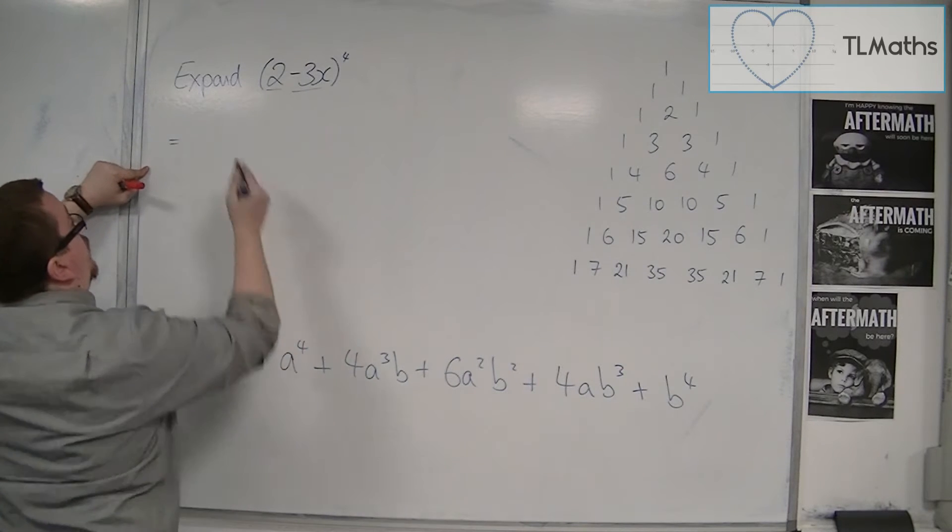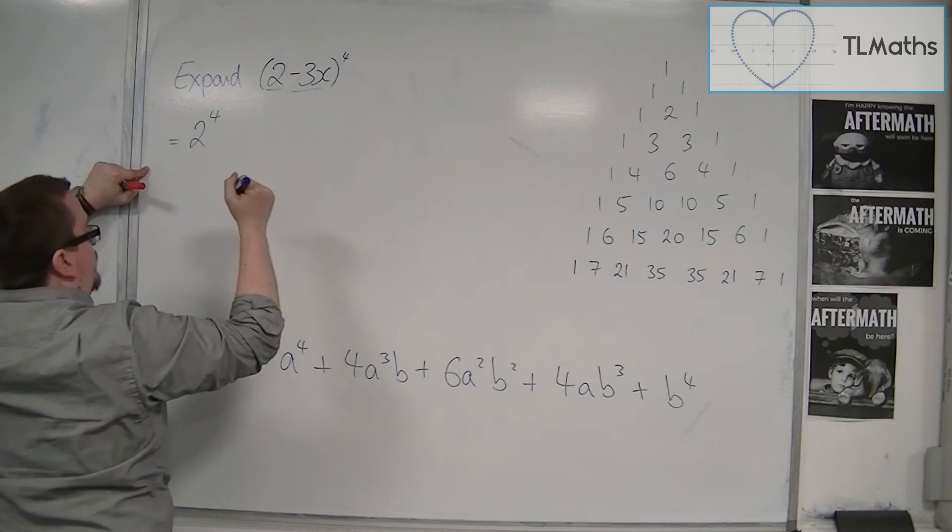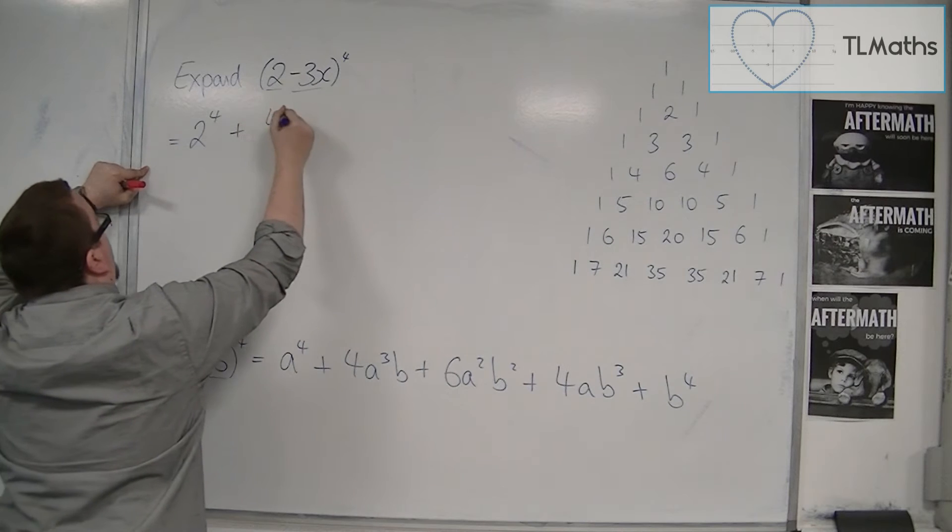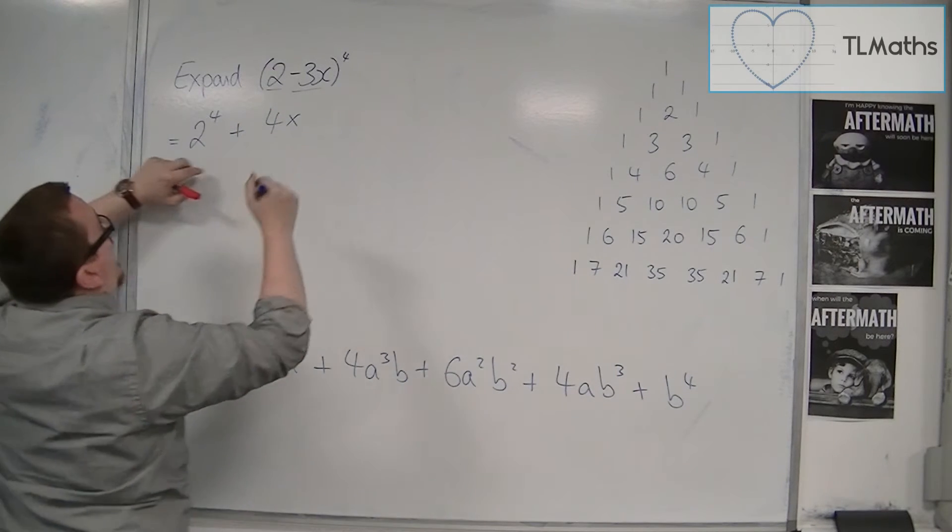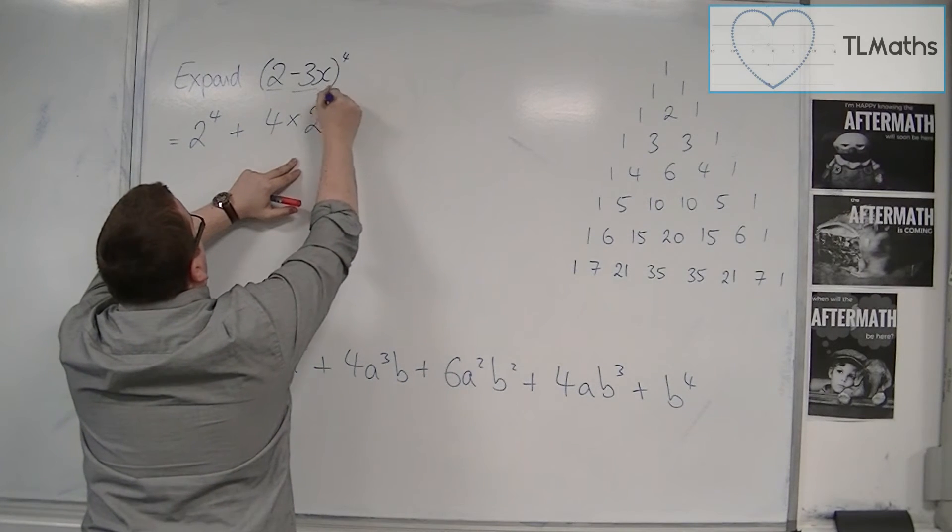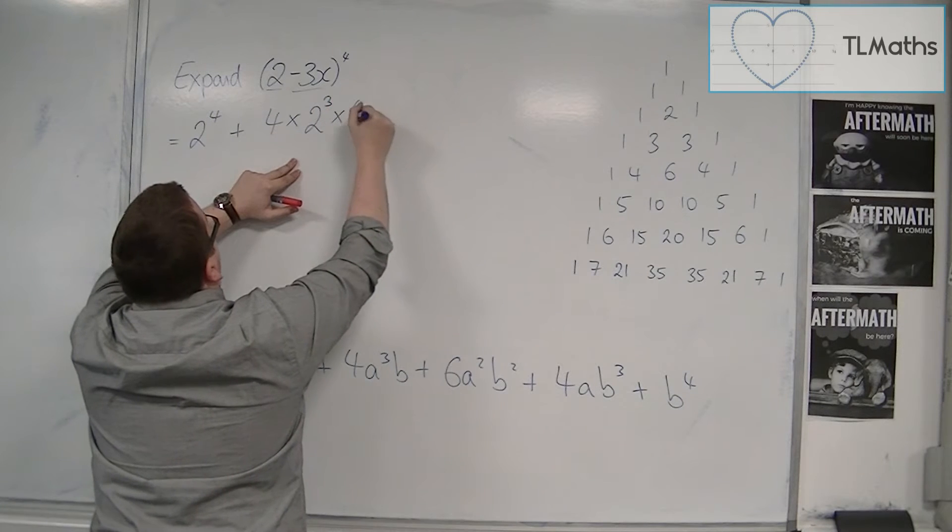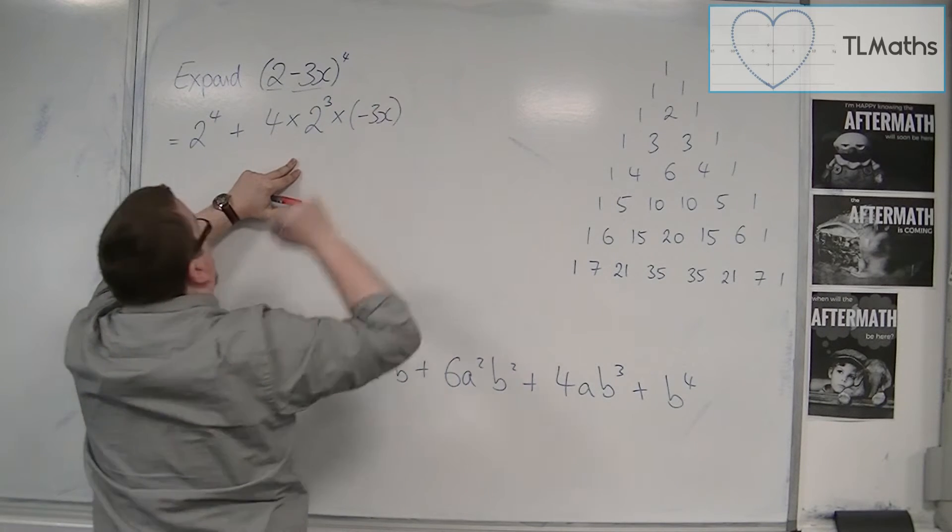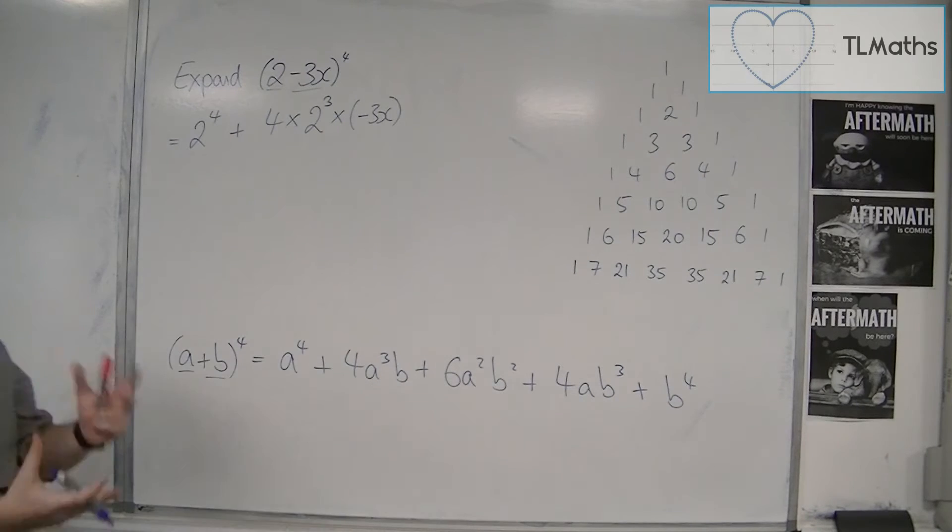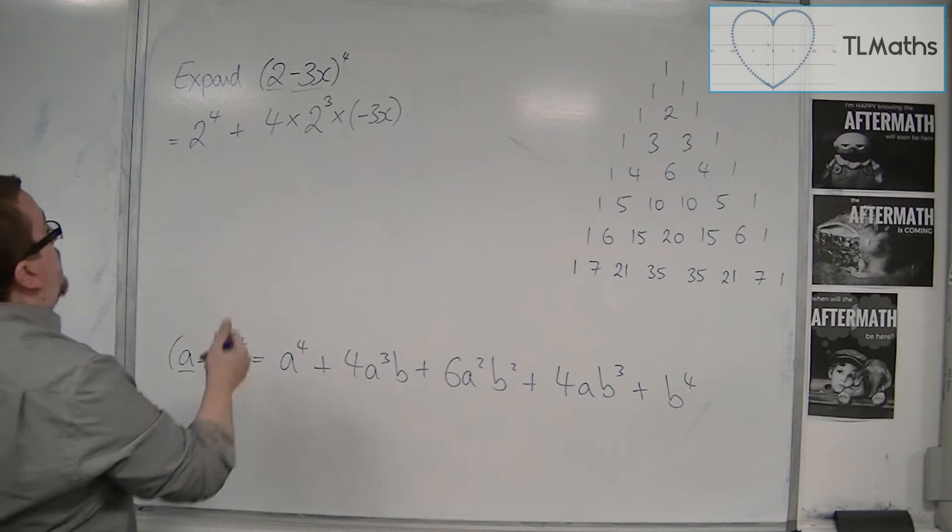So a to the power of 4, so 2 to the power of 4, plus 4 times a cubed, so 2 reduces in power, and the minus 3x I'm going to put in a bracket. And that's effectively to the power of 1.